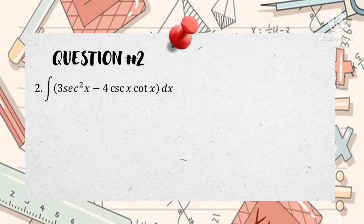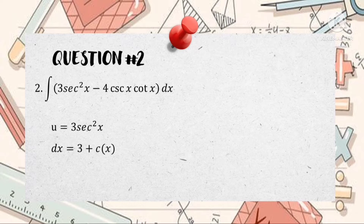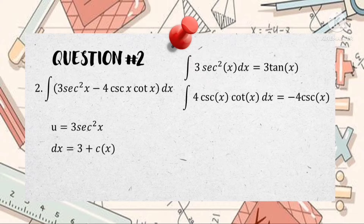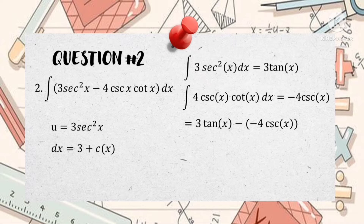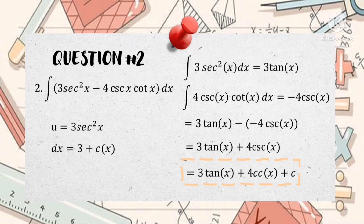Let's move to the second question: the integral of quantity 3 secant squared 2x minus 4 cosecant x cotangent x dx. We're going to separate the equation to look for the integral theorems. The integral of 3 secant squared 2x dx is equal to 3 tangent x, and the integral of 4 cosecant x cotangent x dx is equivalent to negative 4 cosecant x. Combining them gives 3 tangent x minus negative 4 cosecant x, so the final answer is 3 tangent x plus 4 cosecant x plus C.